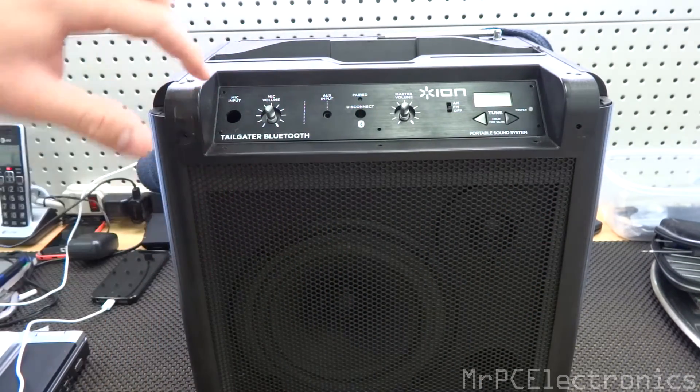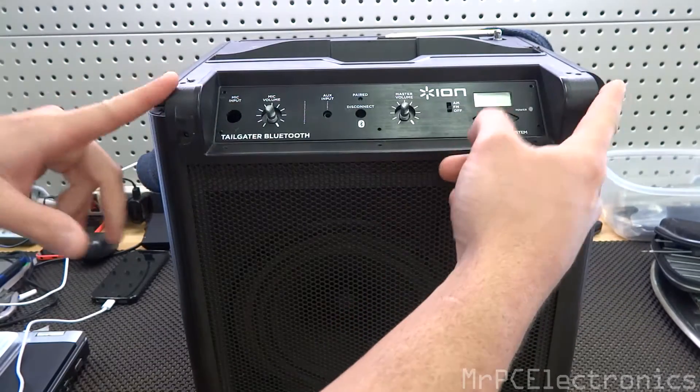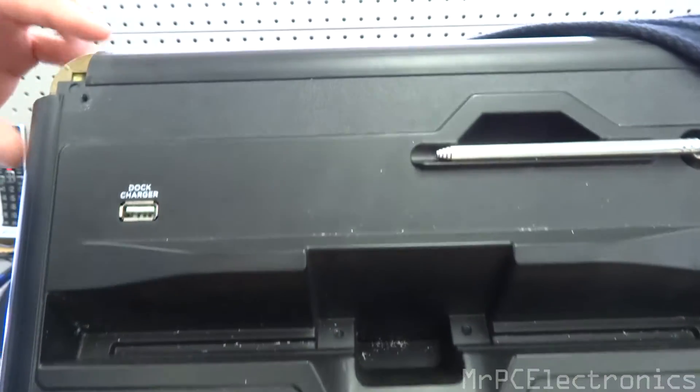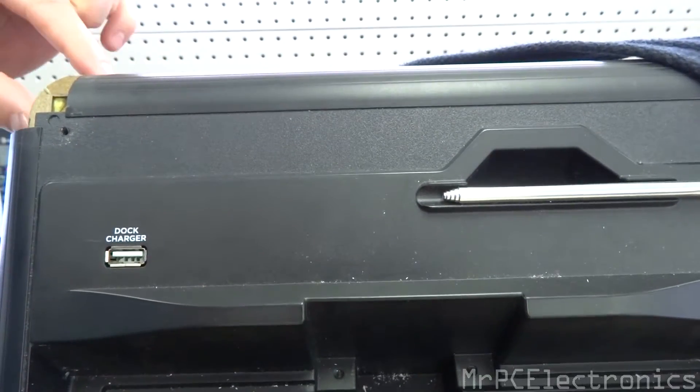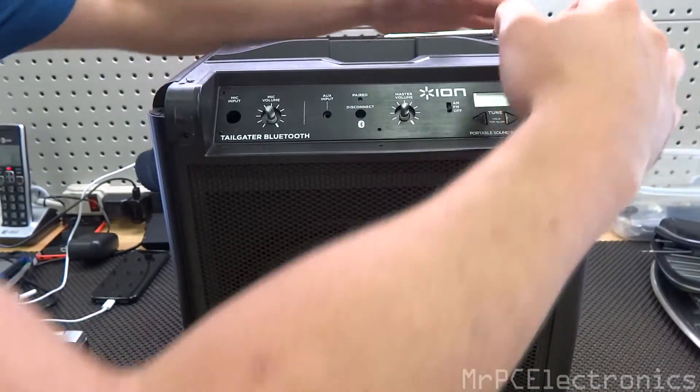Then here on the front, there's going to be one, two, three screws, and then all four corners right here and here. There's a bunch of screws. There's two on the back right here, and then you have one up top. So take all four corners off.